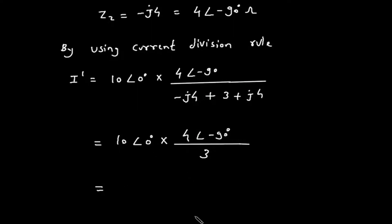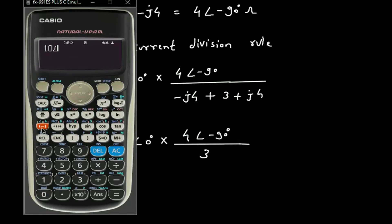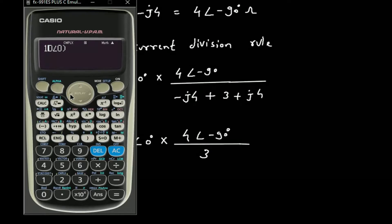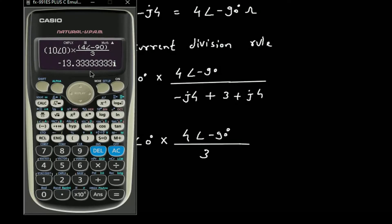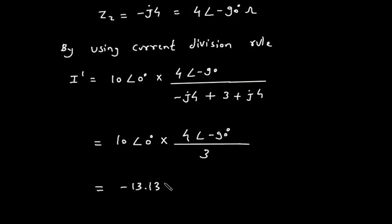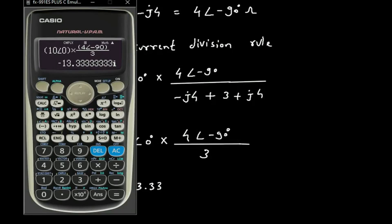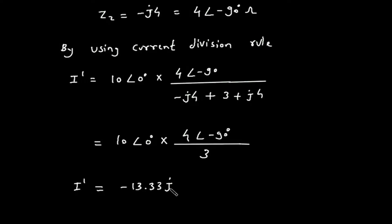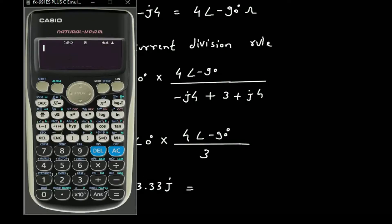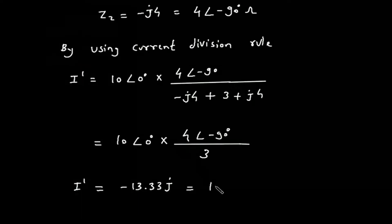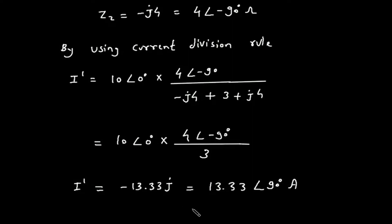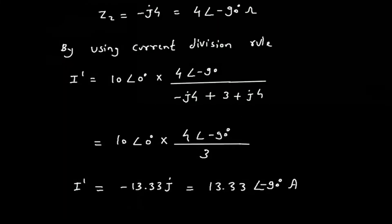Substituting into the calculator: 10∠0° × (4∠−90°) ÷ 3 gives minus 13.33j in rectangular form. Converting to polar form, I prime is 13.33 at an angle of minus 90 degrees Ampere.